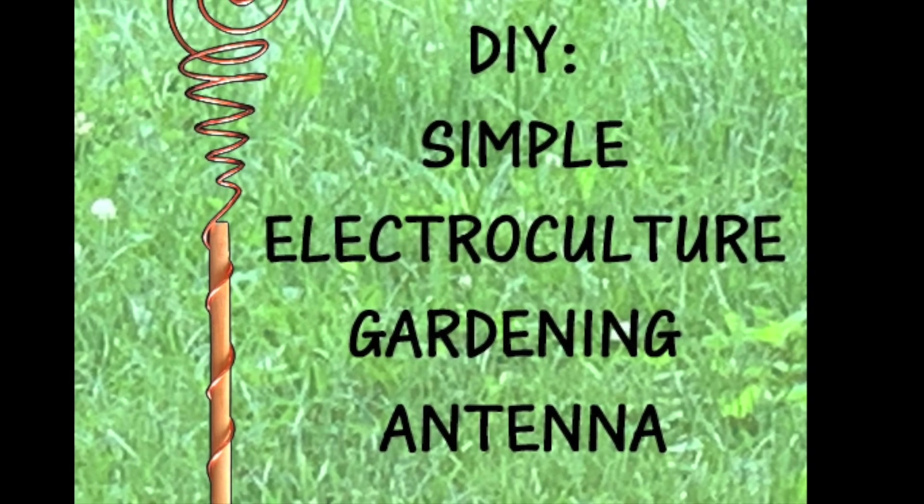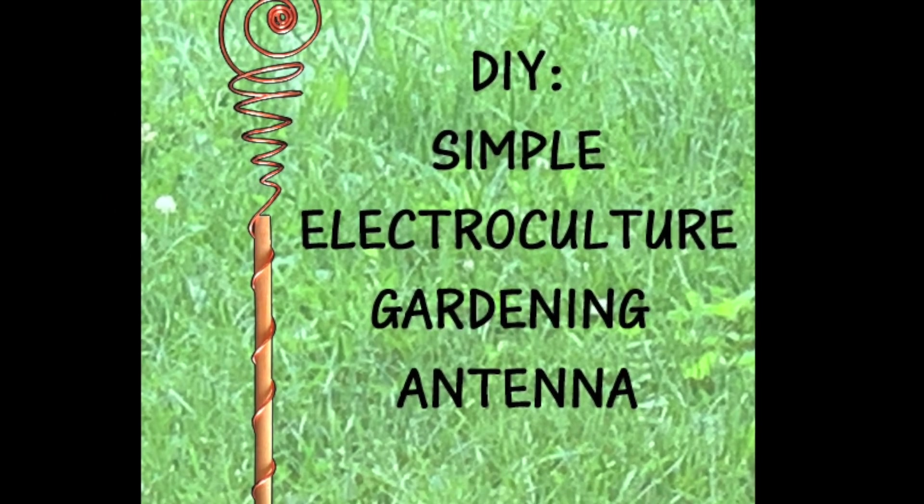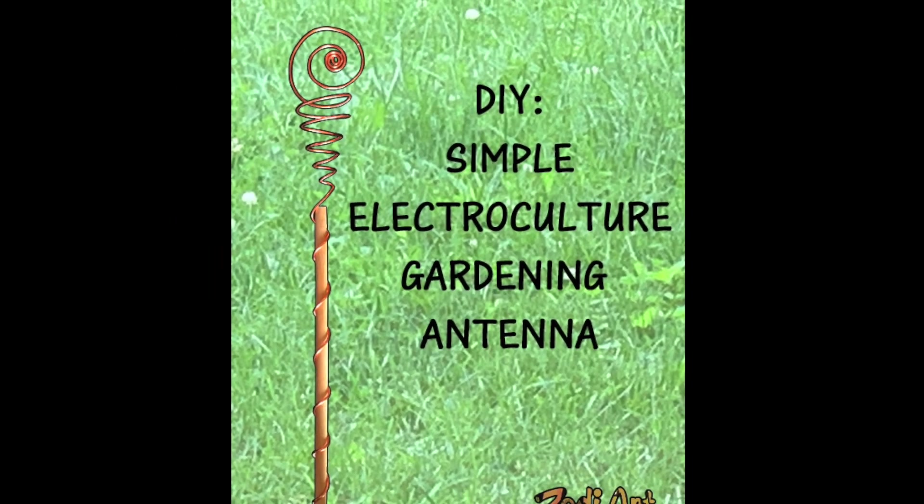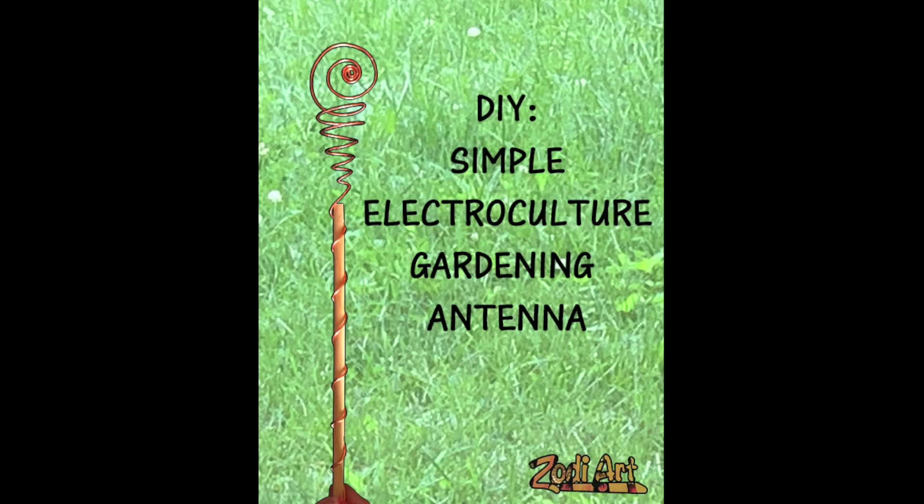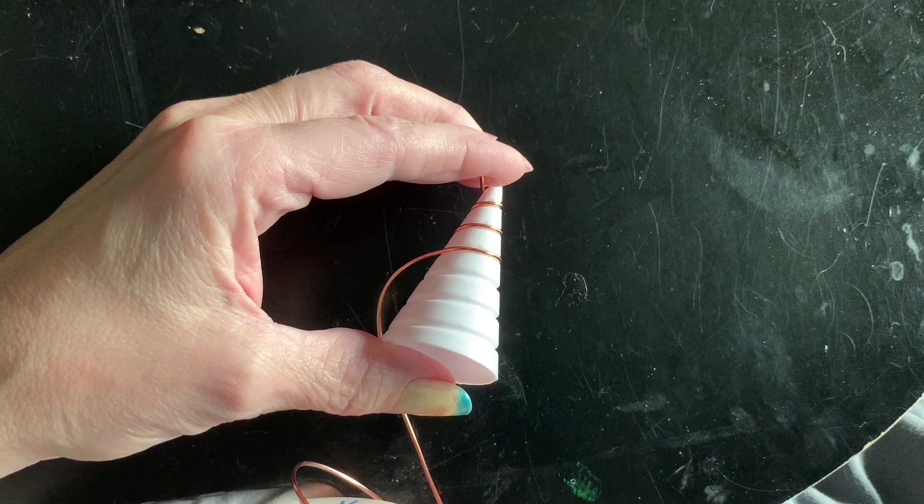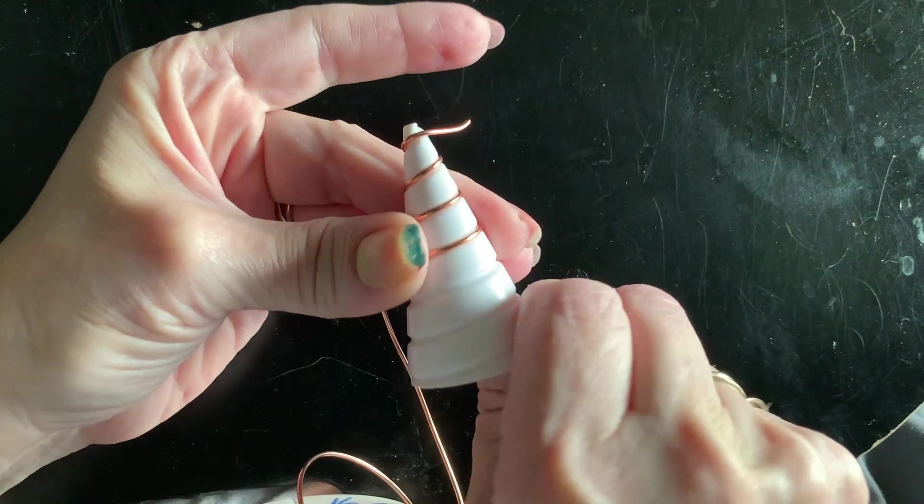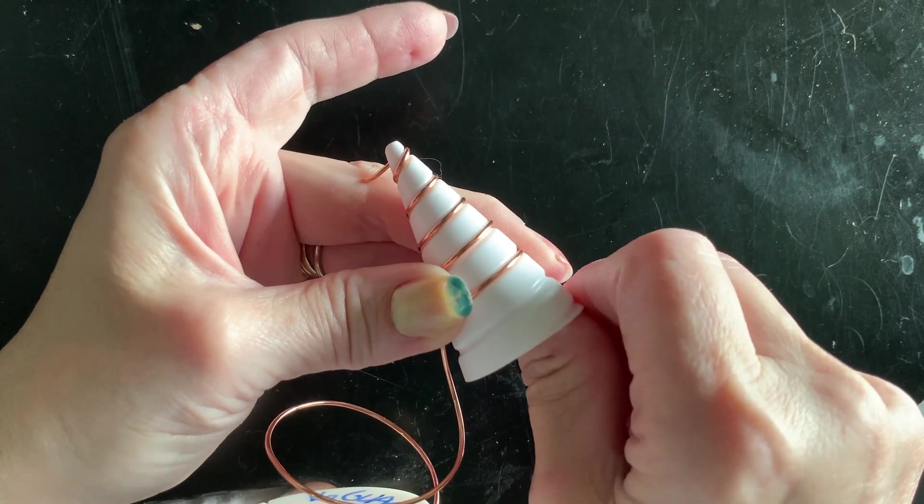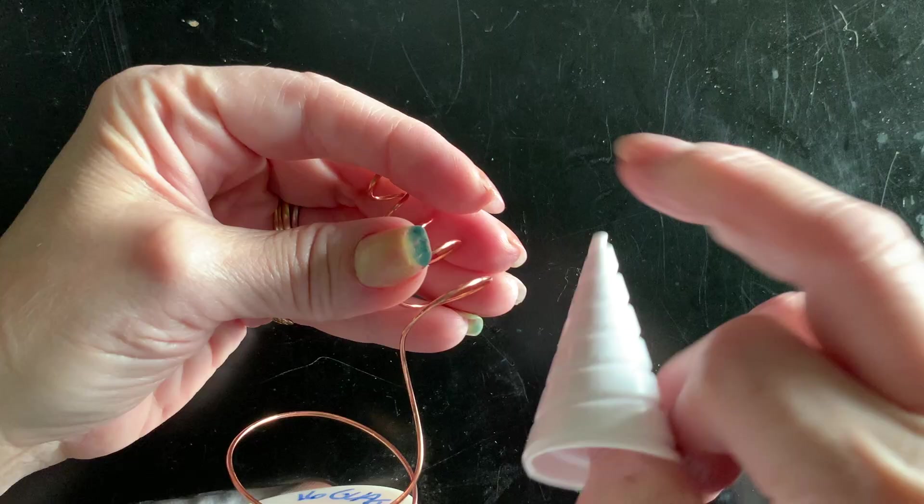Hello and welcome back. Today I'm going to make a simple electroculture gardening antenna. This is a gardening antenna you can put in your indoor or outdoor plants to help them grow and absorb the energies from the Sun.